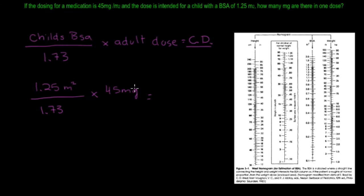And then when we multiply that out, we're going to have 1.25 divided by 1.73, multiplied by 45, and that's going to give us 32.5 milligrams.